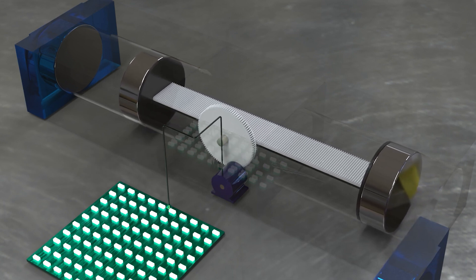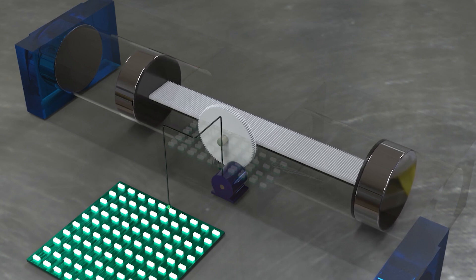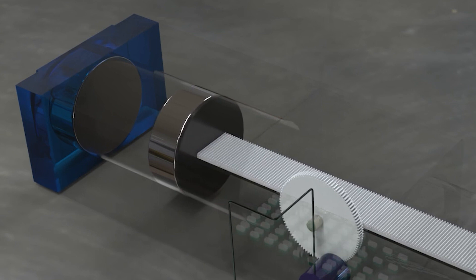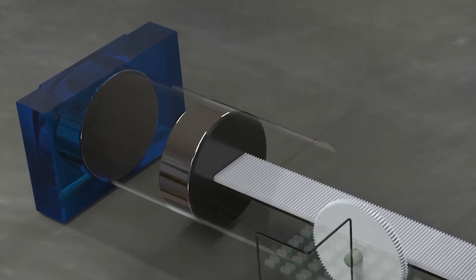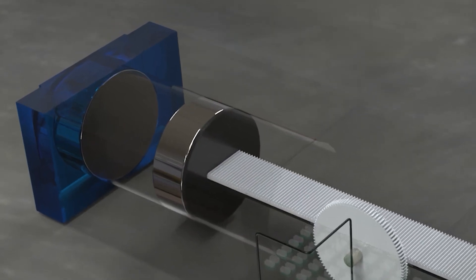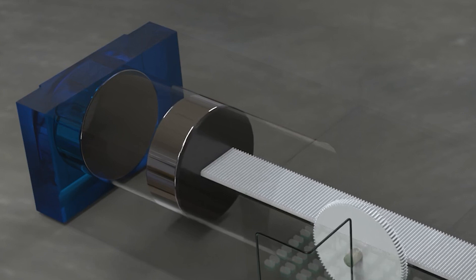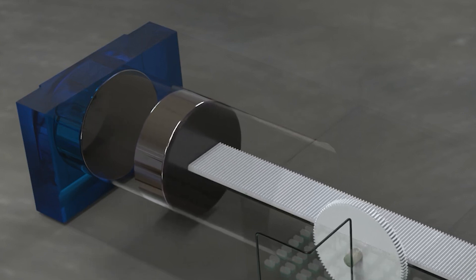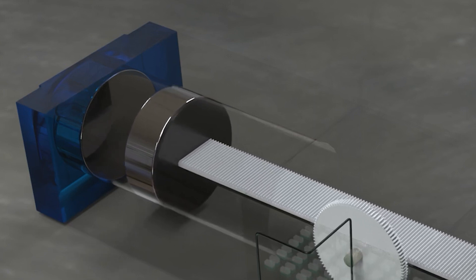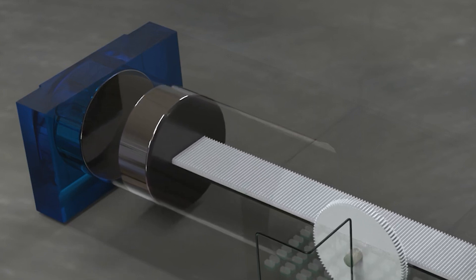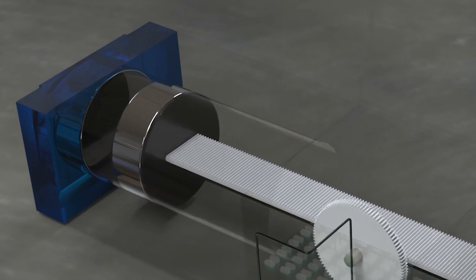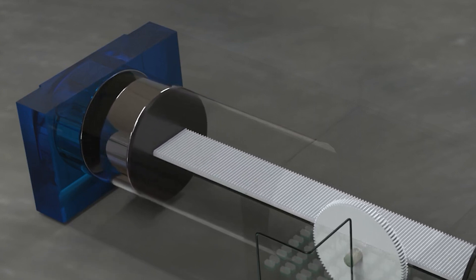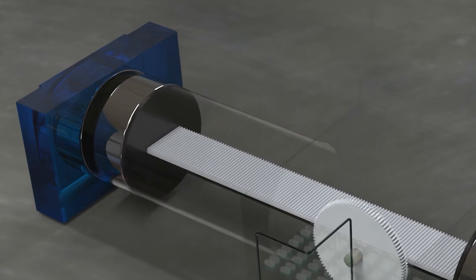To ensure precise control over the movement of the magnets, a sophisticated mechanism has been meticulously designed. This mechanism effectively regulates the speed at which the magnets approach each other, adhering to the laws of physics governing their interaction. By incorporating principles from various branches of physics, such as electromagnetism and mechanics, this system demonstrates excellent performance and accuracy in managing the magnet movement.